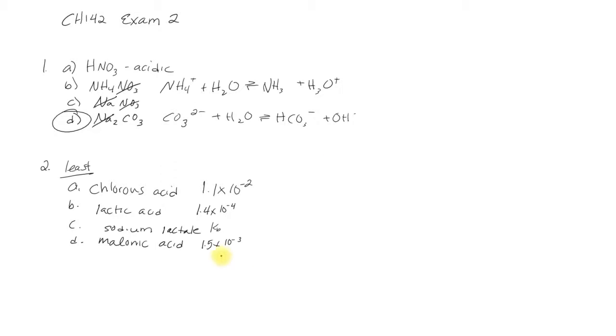Sodium doesn't impact pH. You could figure out the value of that KB by using KW divided by KA. But we don't really need to do that. The question asks us for what is the least acidic thing, in other words what's the most basic thing? These are all acids. This is the most acidic one because the number is the smallest. So the least acidic thing is going to be sodium lactate because it's a base.